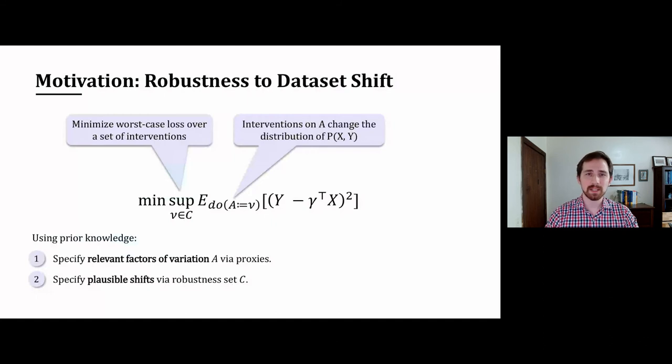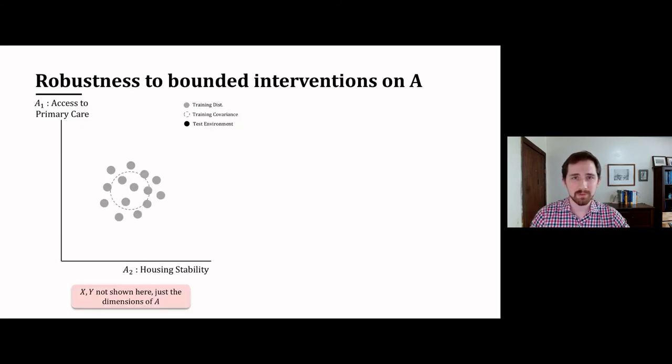I would like to highlight that this objective has two areas where we use prior knowledge. One is the specification of this variable A. But the second is the specification of this robustness set C. To give more intuition for our contributions, I'd like to discuss that a bit further.